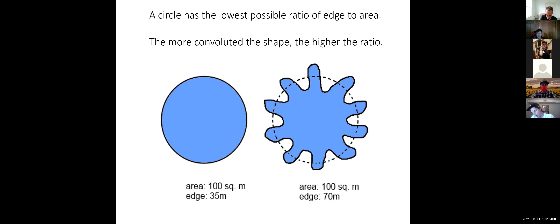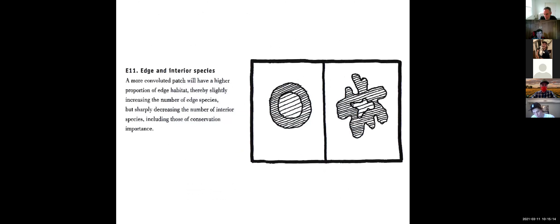The shape has a couple of different impacts because edges have different characteristics than patch interiors. The more convoluted the patch, the higher the proportion of edge habitat, which increases the number of edge species but decreases the number of interior species. It only has a slight impact in raising the number of edge species, but a huge impact in reducing the number of interior species.